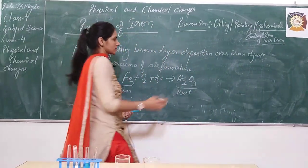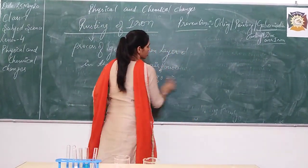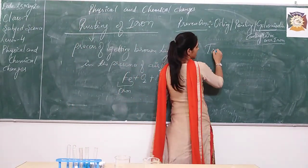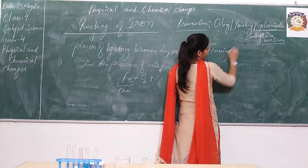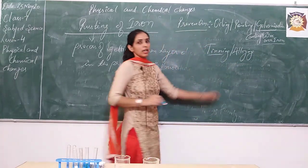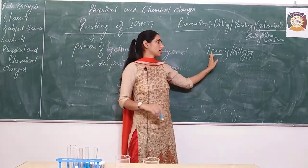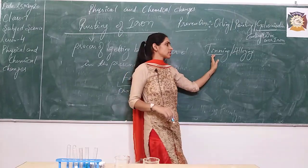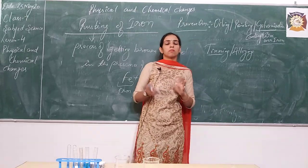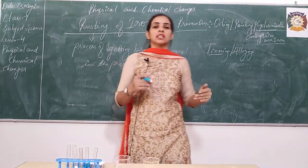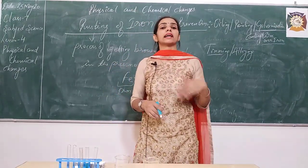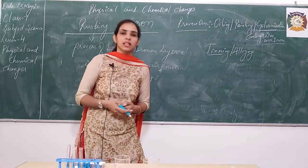Two more methods are there — just for extra knowledge. One is zinc coating where zinc metal gets deposited on the iron. The other is alloying, where two or more metals are combined so that pure iron is changed to another metal alloy, which has less tendency for rusting.